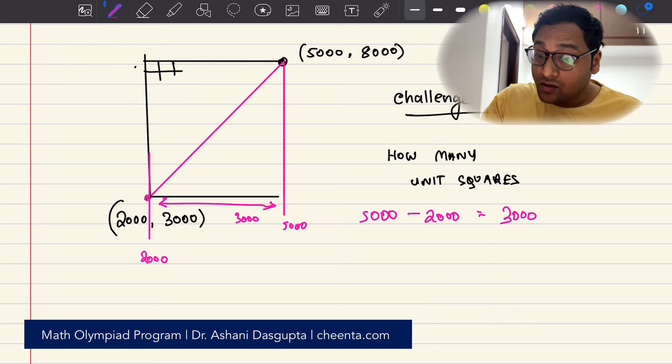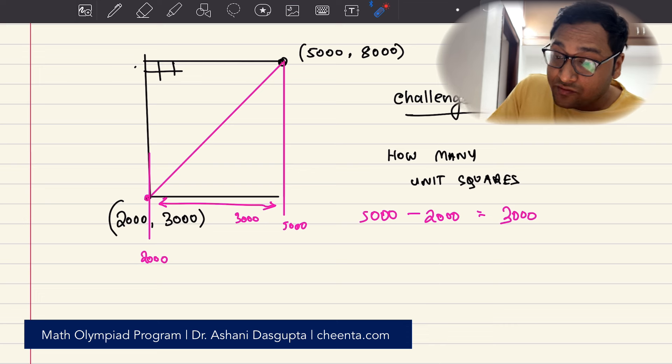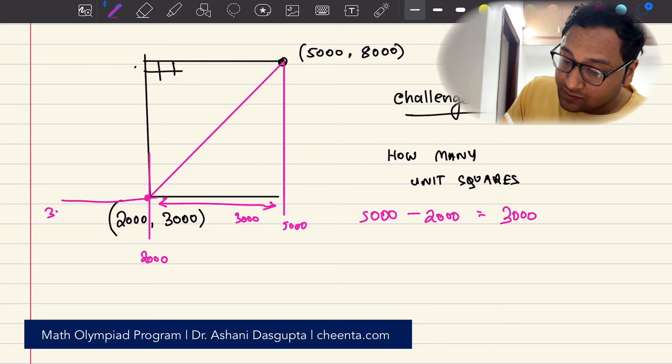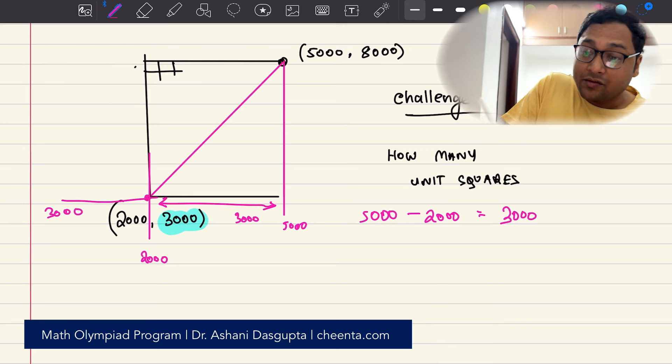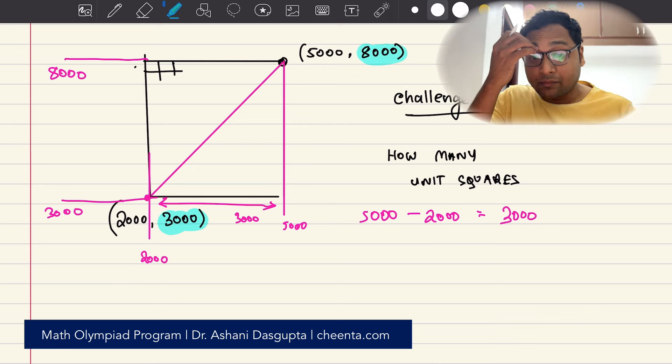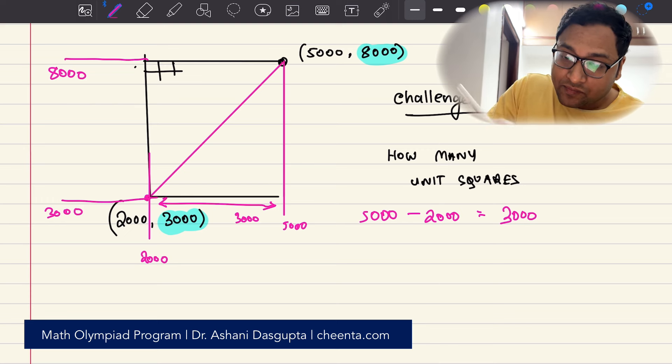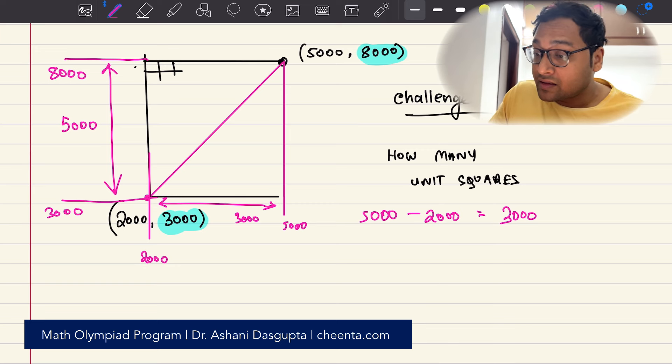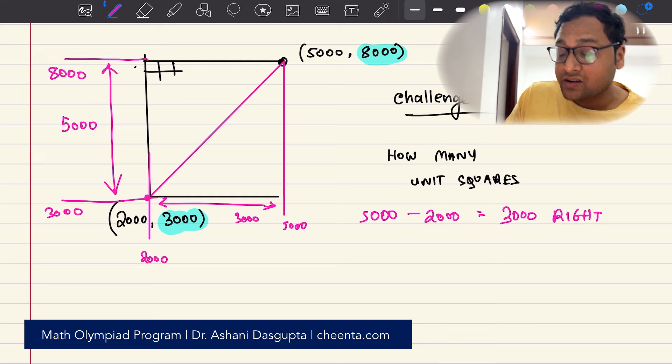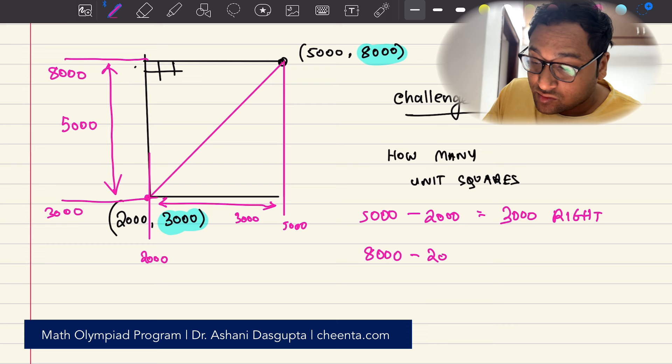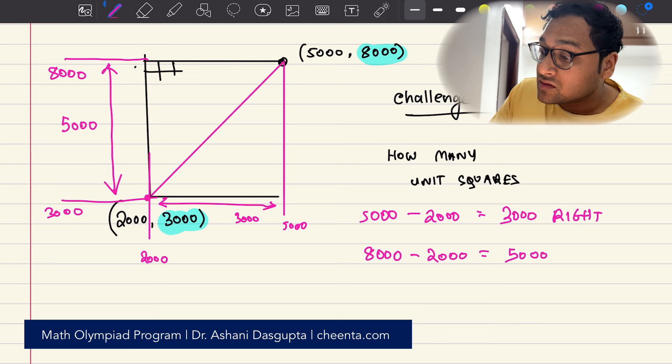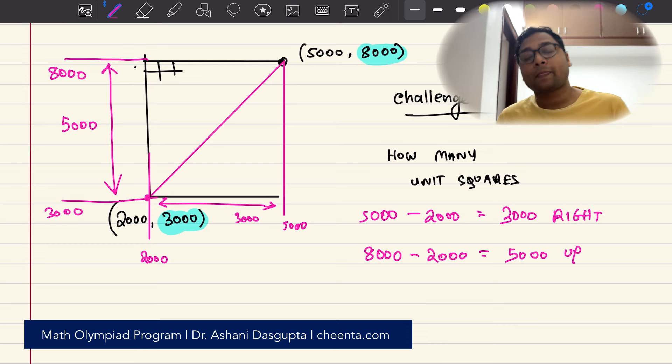How much are you moving upward? Well, you are starting from the level of 3000 and you are moving up to the level of 8000. So the difference is 5000. You are moving right 3000 units and you are moving 8000 minus 3000, that is 5000 units upward.